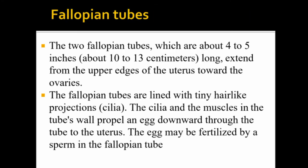The fallopian tubes can be measured at 4 to 5 inches, or about 10 to 13 cm in length. The fallopian tubes are lined with hair-like projections called cilia. The tube walls contain muscular layers.